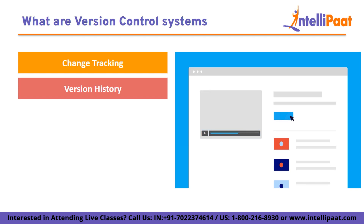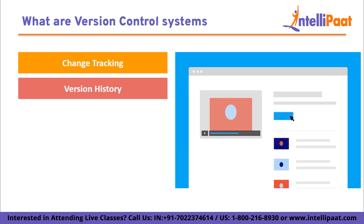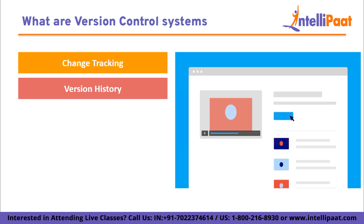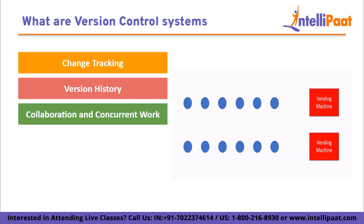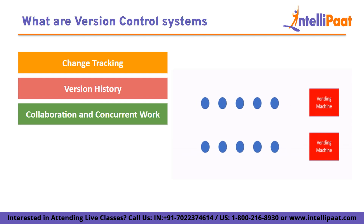Version history: a VCS maintains a chronological record of all versions of files and the entire project. This history allows you to access and revert to any previous version, compare different versions, and understand how the project has evolved over time. Collaboration and concurrent work: VCS enables multiple users to work on the same project simultaneously without conflict. It provides mechanisms to merge changes from different users, ensuring smooth collaboration and preventing data loss or overwriting.